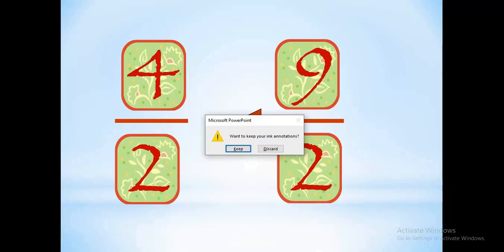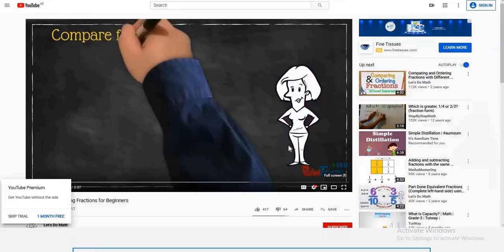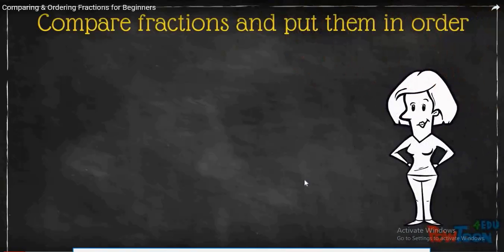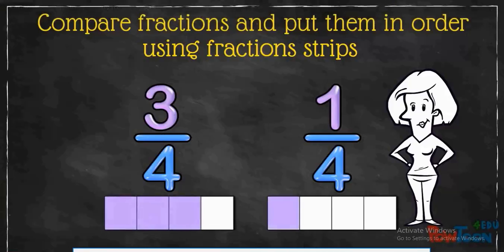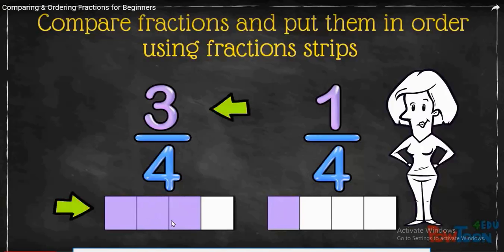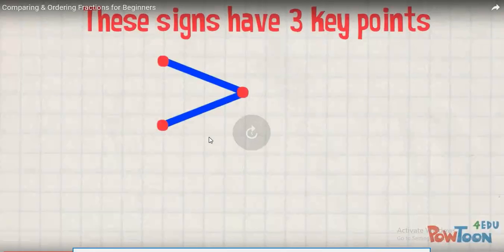Now I want to show you a quick video about comparing — why we say 3 over 4 is higher than 1 over 4. The denominator is 4, so we have 4 parts. Here we should color 3 parts, and here we should color 1 part. When we have three parts colored and only one part colored, of course the one with more shaded squares is bigger. So 3 over 4 is the biggest number.